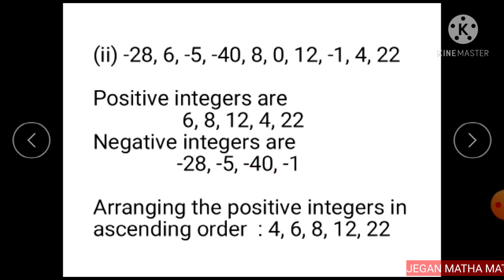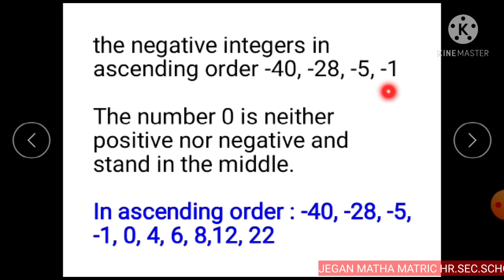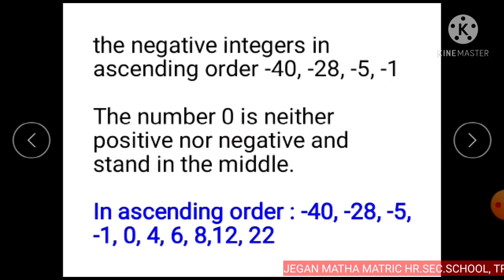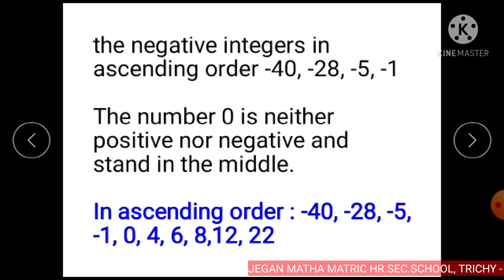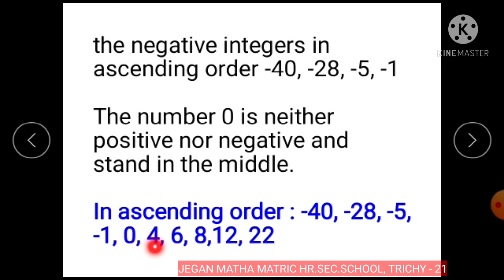We arrange the positive integers in ascending order: 4, 6, 8, 12, and 22. The negative integers in ascending order: minus 40, minus 28, minus 5, and minus 1. Here, the number 0 is neither positive nor negative and stands in the middle. So the given integers in ascending order are minus 40, minus 28, minus 5, minus 1, 0, 4, 6, 8, 12, and 22.